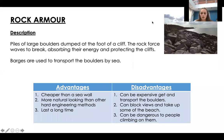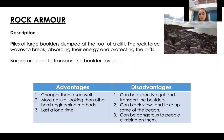Rock armour consists of large boulders dumped at the foot of cliffs. The rock forces waves to break, taking away their energy so they can't erode the cliffs. Barges are used to transport the boulders. Advantages: it's cheaper than a seawall, more natural-looking than other hard engineering methods, and lasts a long time. Disadvantages: it can be expensive to source and transport the boulders, it can block views and take up beach space, and it can be dangerous for people climbing on it.